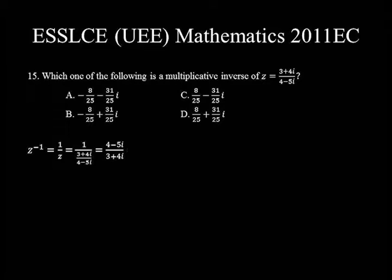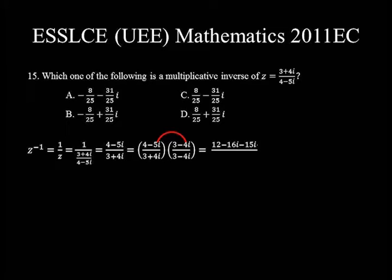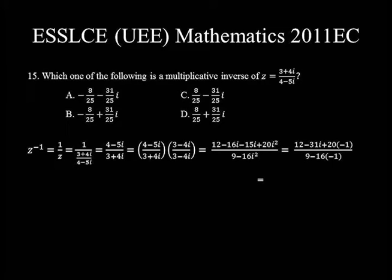Multiply both numerator and denominator by 3 − 4i. The numerator gives: 4×3 = 12, 4×(−4i) = −16i, (−5i)×3 = −15i, (−5i)×(−4i) = +20i². The denominator is (3 + 4i)(3 − 4i) = 3² − (4i)² = 9 − 16i². So the numerator becomes 12 − 16i − 15i + 20(−1) = −8 − 31i, and the denominator becomes 9 − 16(−1) = 9 + 16 = 25.